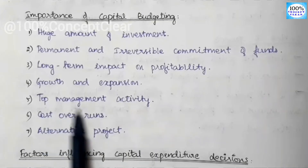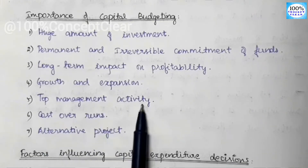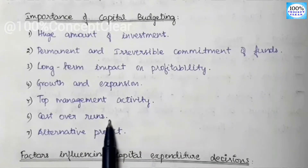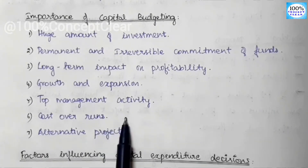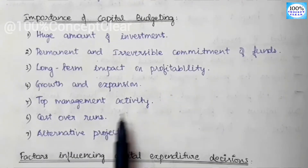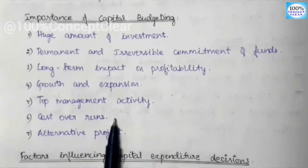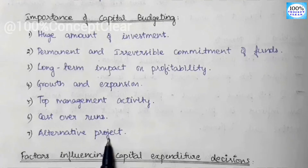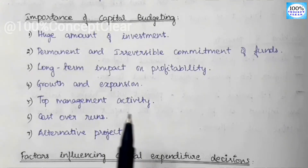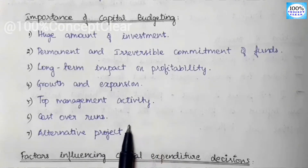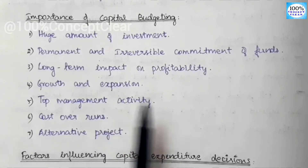Next importance is Top Management Activity. In capital budgeting decisions, this is a very important business decision, and top management gains a lot of experience from it. Next is Cost Overruns — when we get a budget, we manage a lot of funds. Finally, Alternative Projects: a company already has many projects, and we use capital budgeting to evaluate and choose alternative projects.